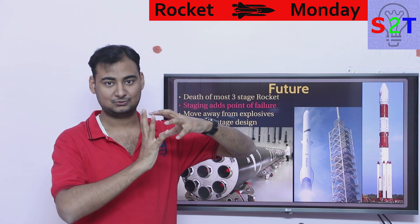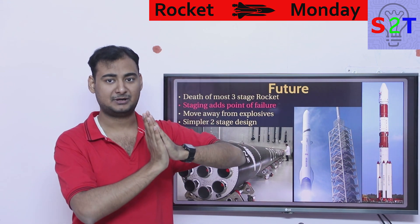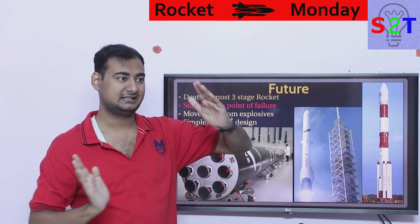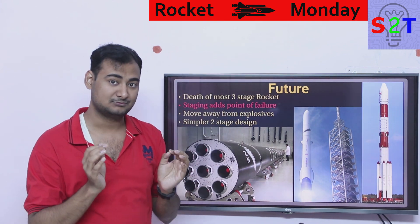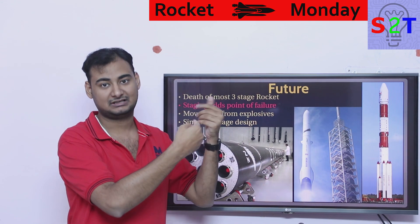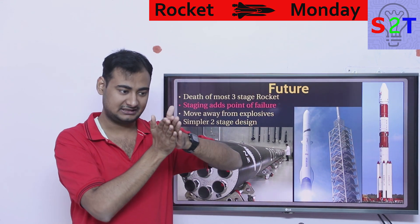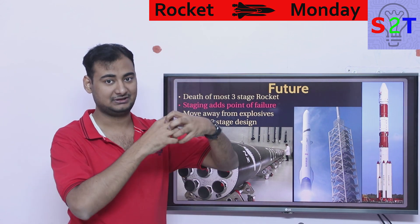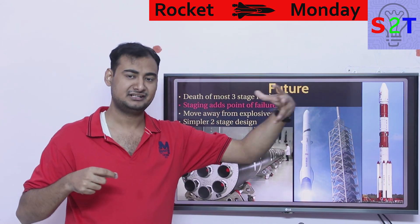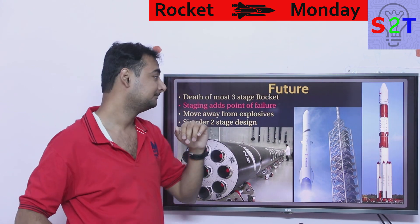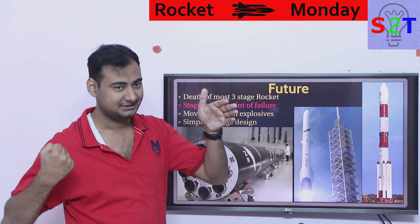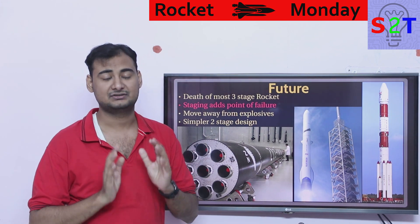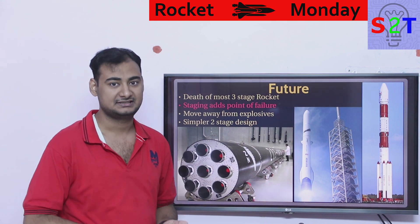Saturn V literally had multiple small solid rocket motors whose sole job was to ensure clean separation. When you explosively separate stages, both have inertia from the explosive impulse — which could send the lower stage back into the upper stage. So Saturn V had small retro motors on the lower stage to slow it down, and ullage motors on the upper stage to give it extra speed, ensuring the gap between them could never close. That's why in old mission footage you see small rocket engines firing just before the main engine lights.